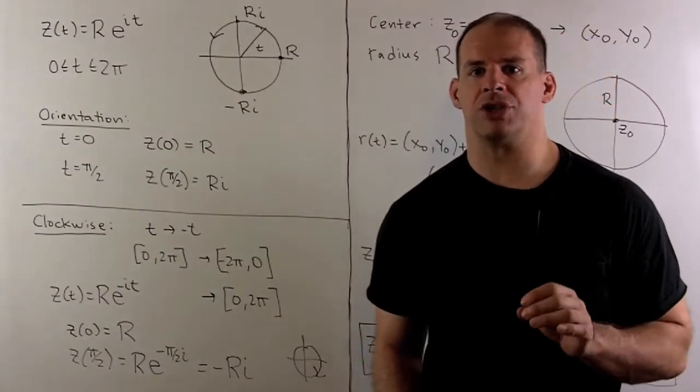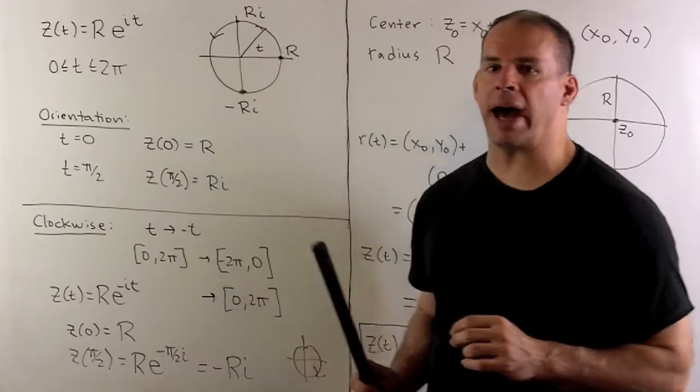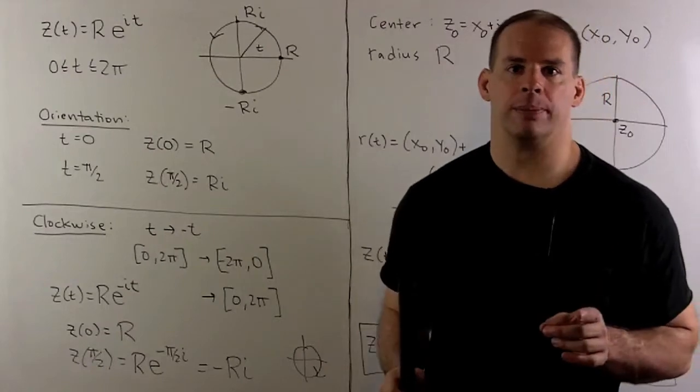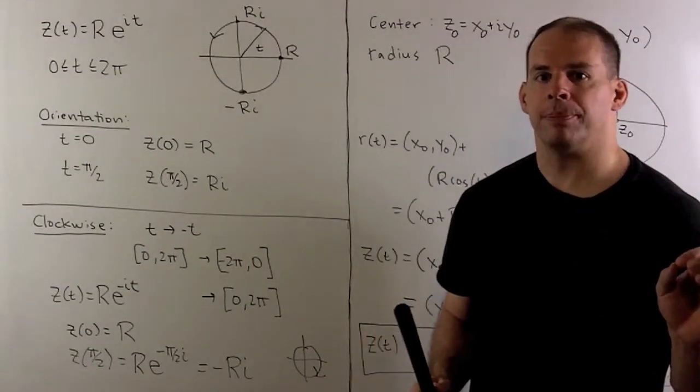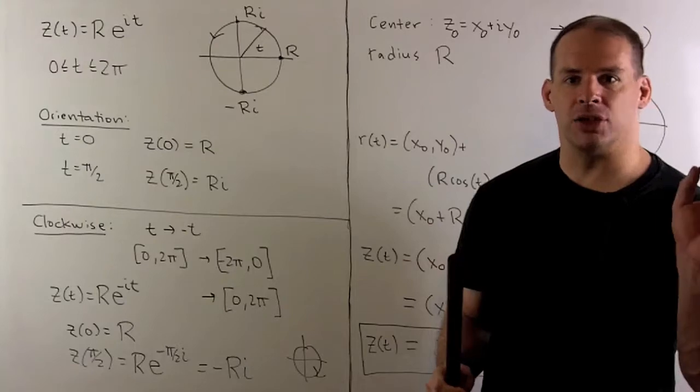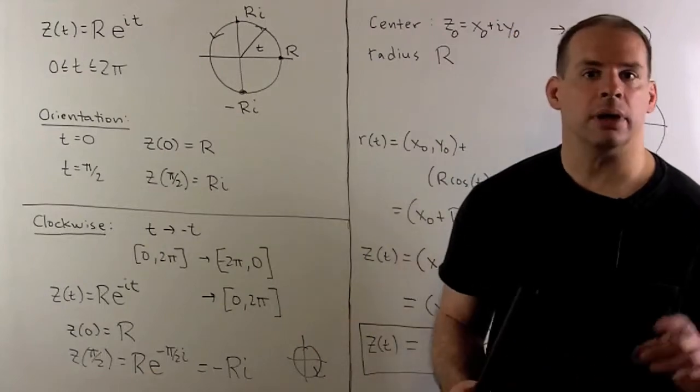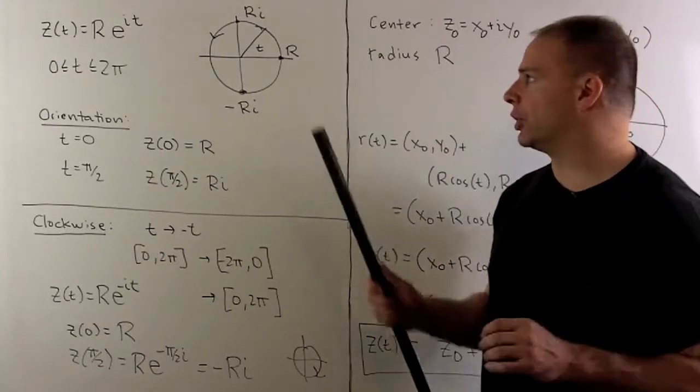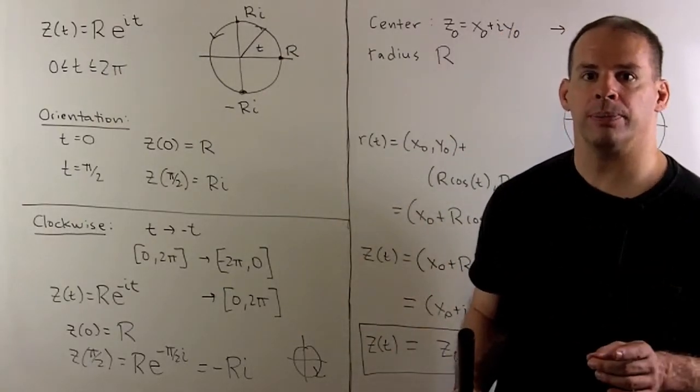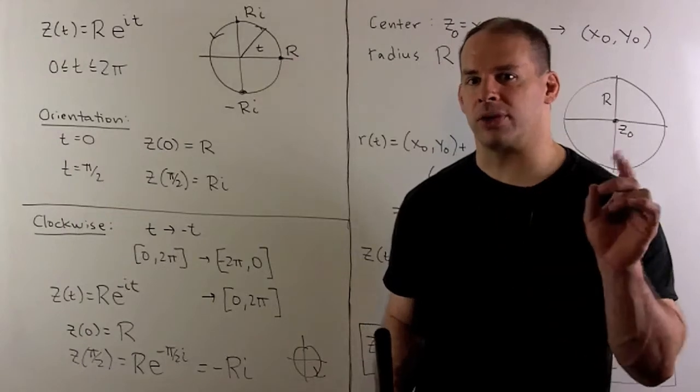Let's verify the orientation by checking two points. If I use the endpoints, t equals 0 and 2 pi, in both cases z returns R, so that doesn't help us. If we use 0 and pi, z returns R and minus R. Again, that's no help. We still can't tell if we're going along the top or along the bottom. If we use 0 and pi halves, z returns R and R times i. Now we can see movement in the counterclockwise direction. So if we're going to check orientation by using two points, we want to make sure those two points are close so that there's no ambiguity.